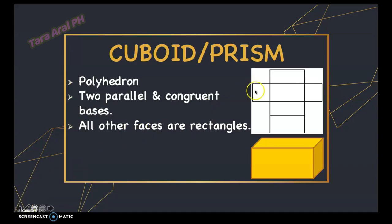Since the shape on the bottom and the top are the same, the general category of this shape is called a prism. Prisms are more specifically named by the shape of the base. In this case the base is a square, so this solid figure is called a square prism. Note that a prism has two polygonal bases — two congruent and parallel bases.